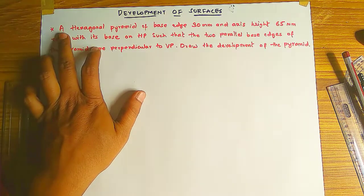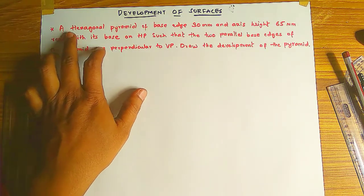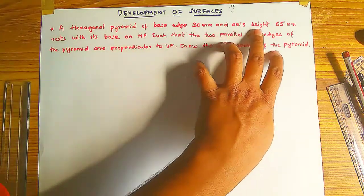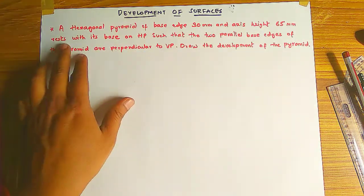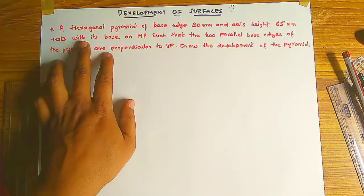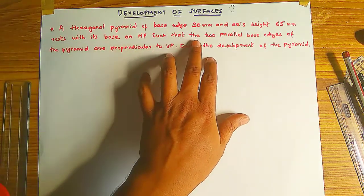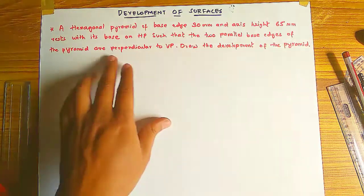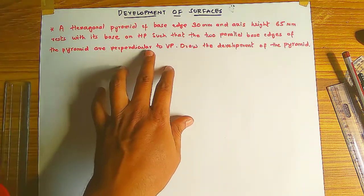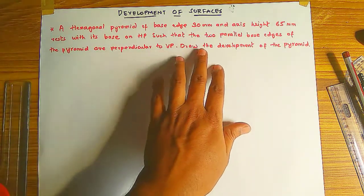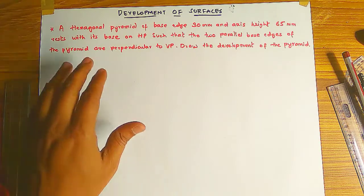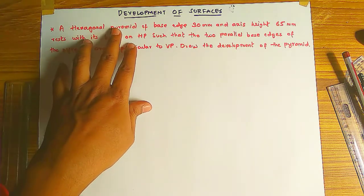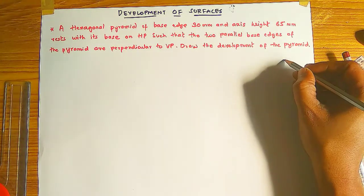Starting the problem now. A hexagonal pyramid of base edge 30mm and axis height 65mm rests with its base on HP, such that the two parallel base edges of the pyramid are perpendicular to VP. Draw the development of the pyramid. So we have to develop the hexagonal pyramid.